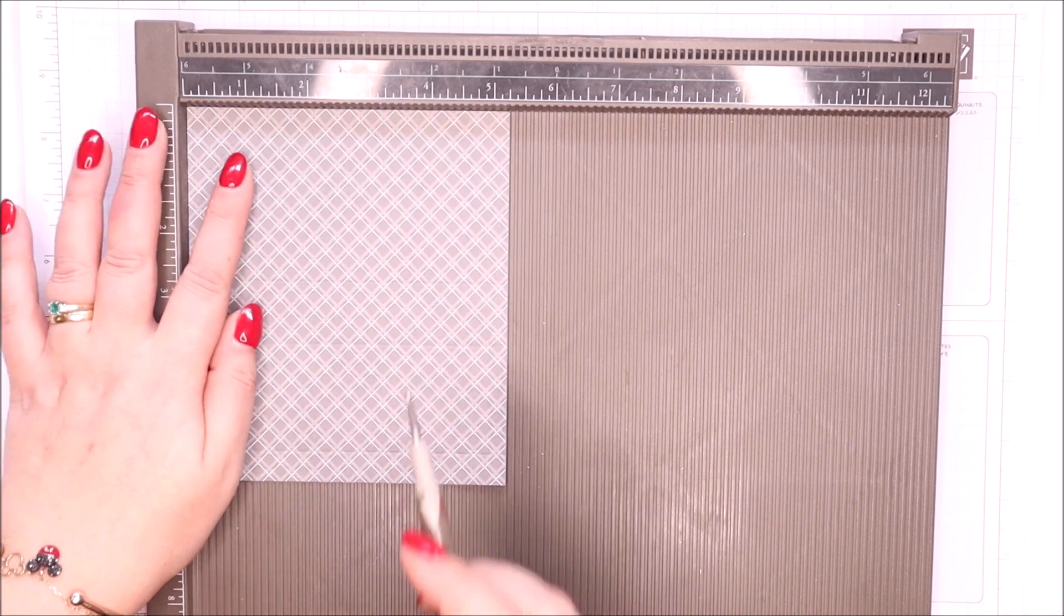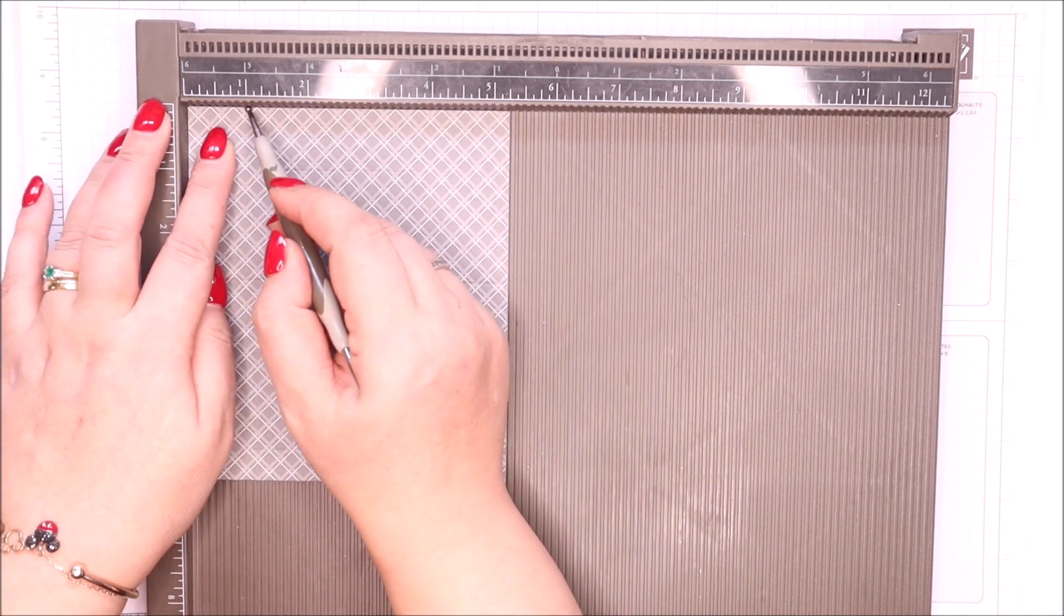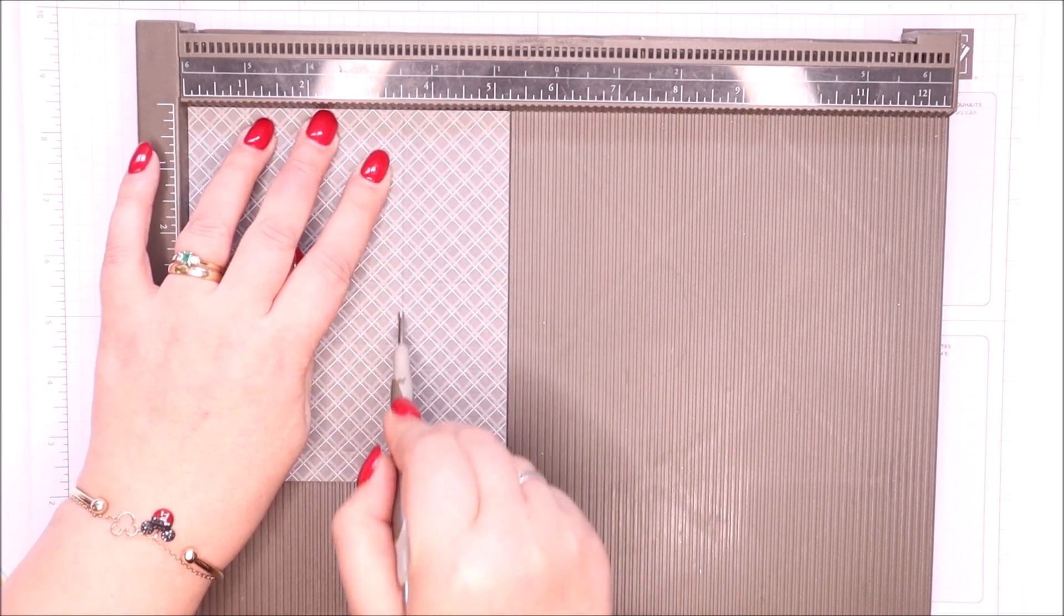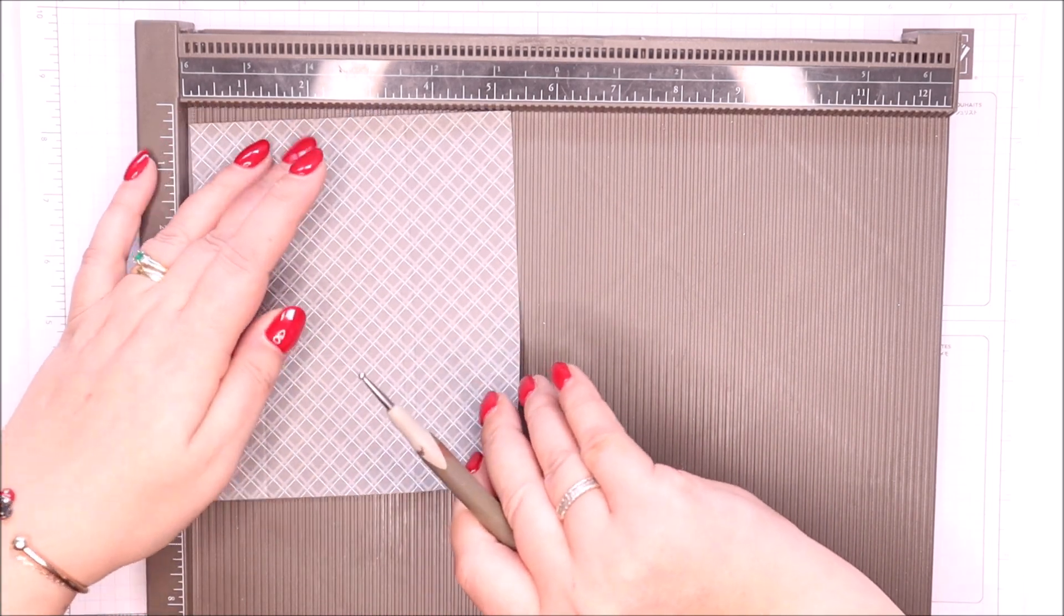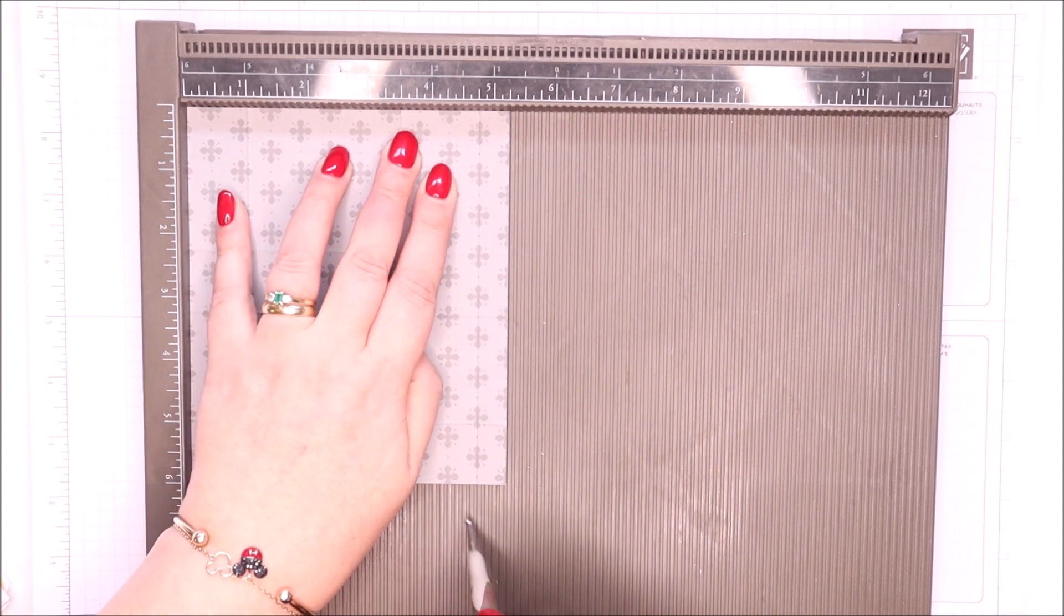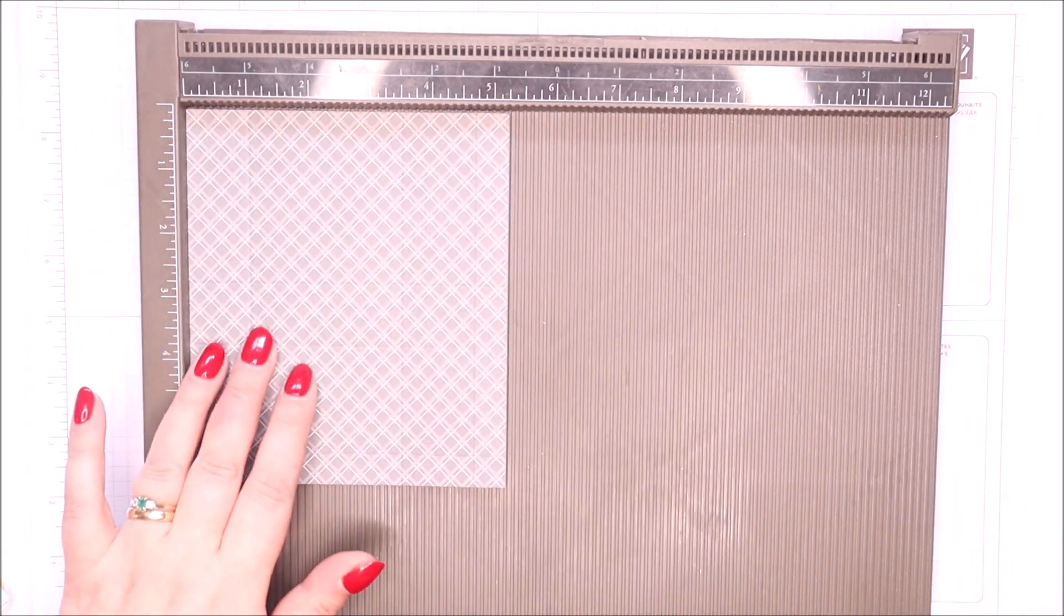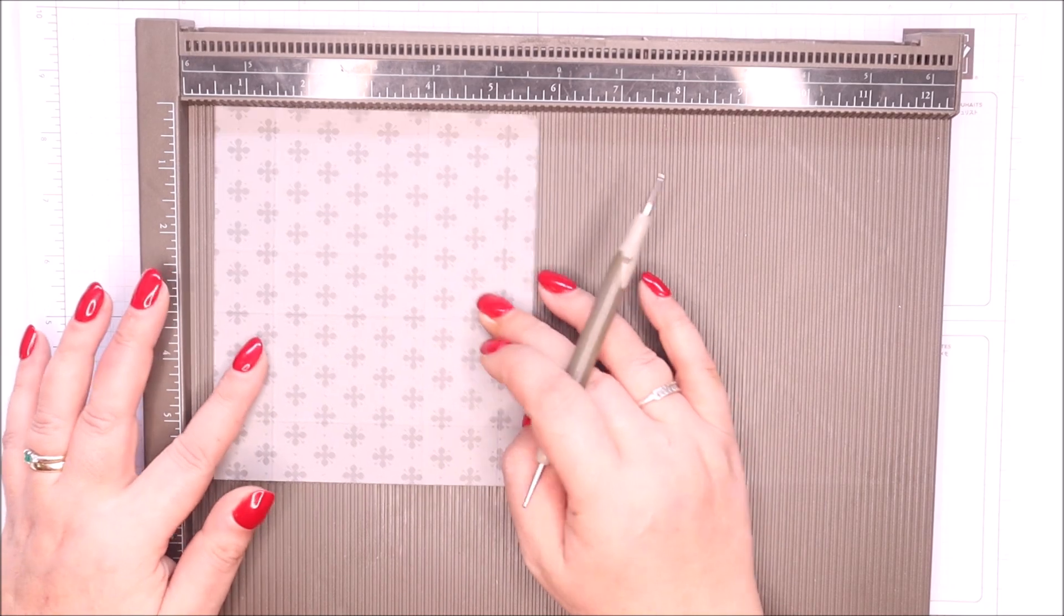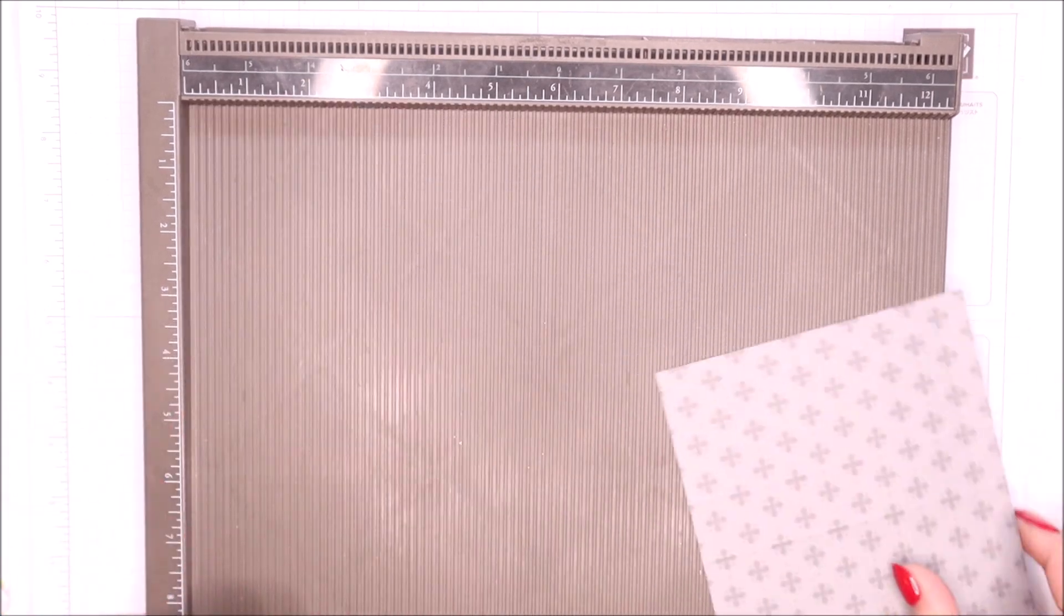And then turn it round to this shorter side. Score it at one, three and a half, turn it over, not round, over, and score it at four and three quarters. And again, that was inches. So in metric, it's scoring at two and a half, nine, turning it over and scoring it at 12 centimeters.